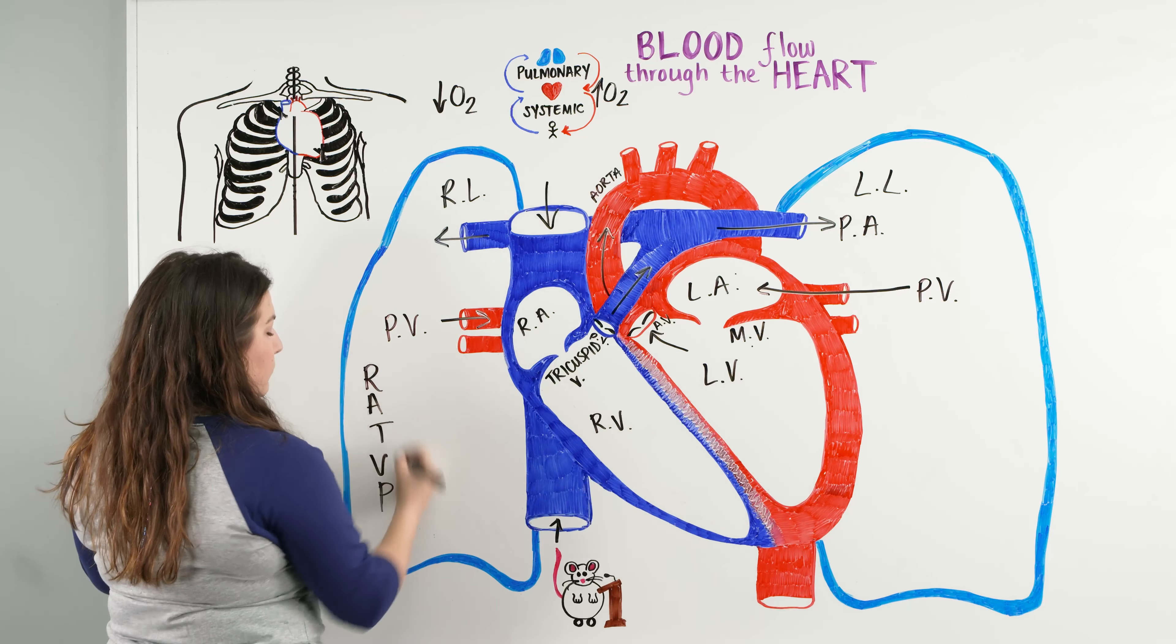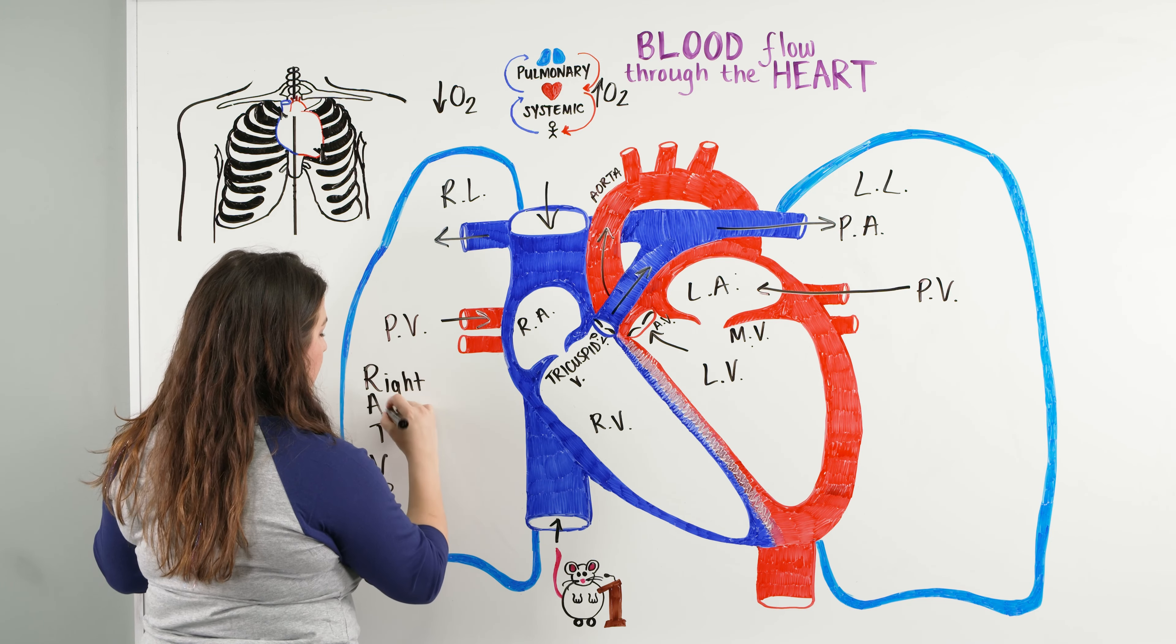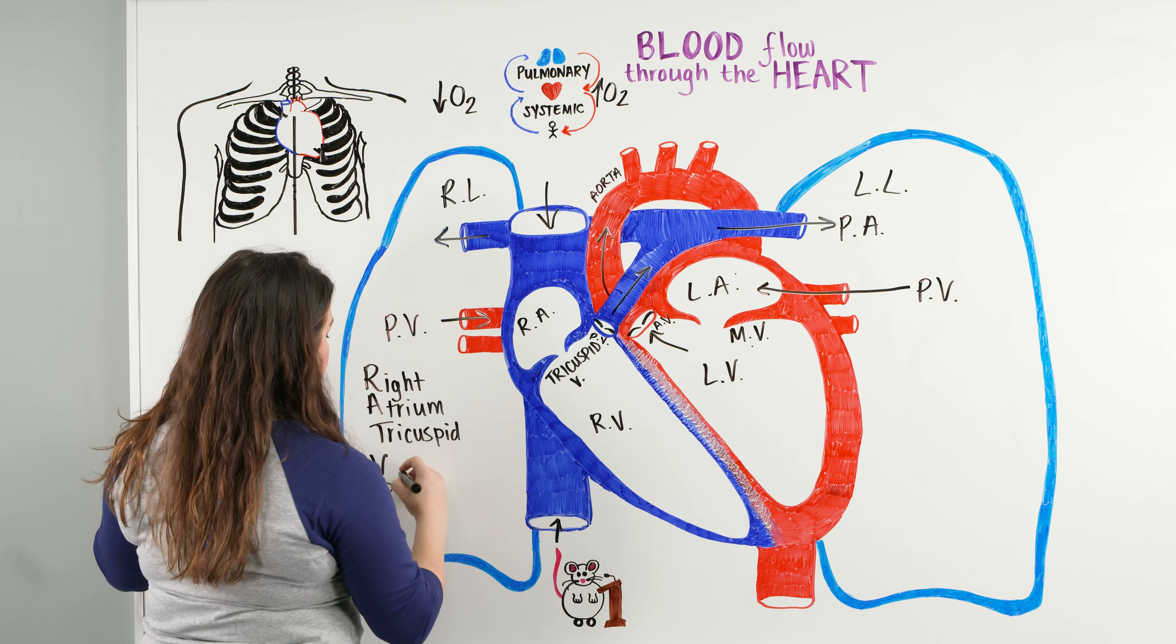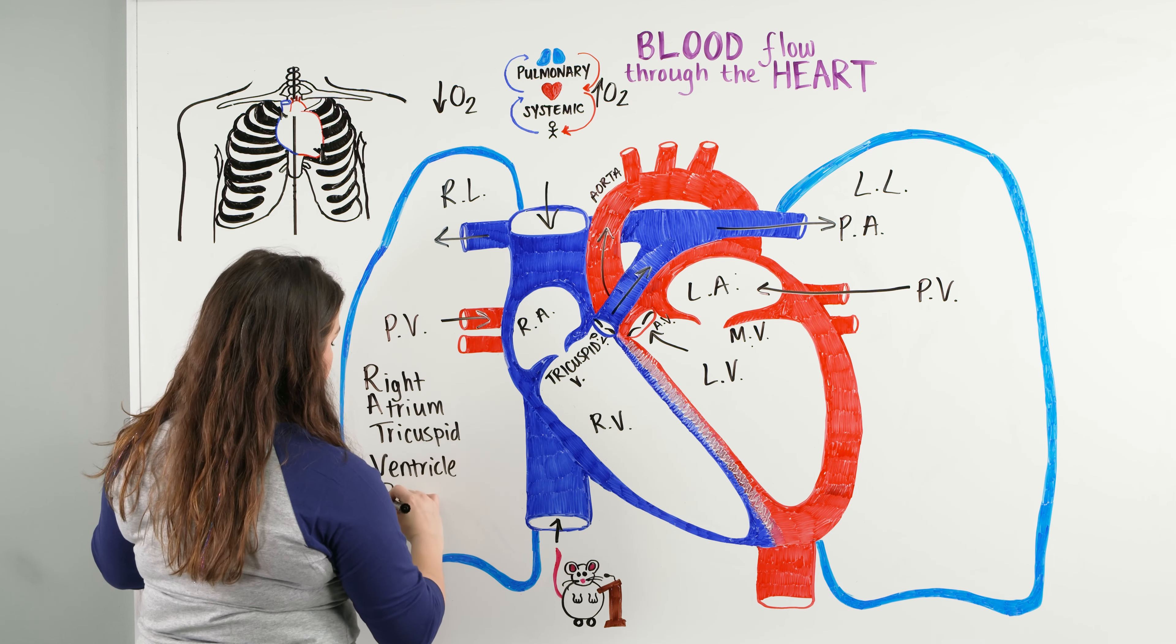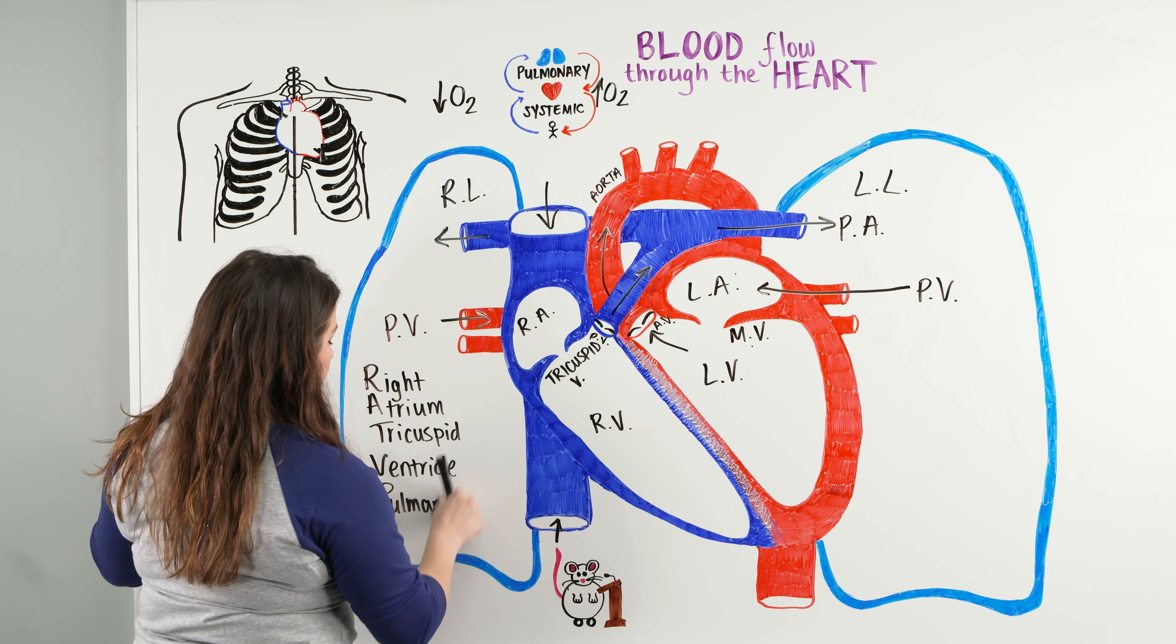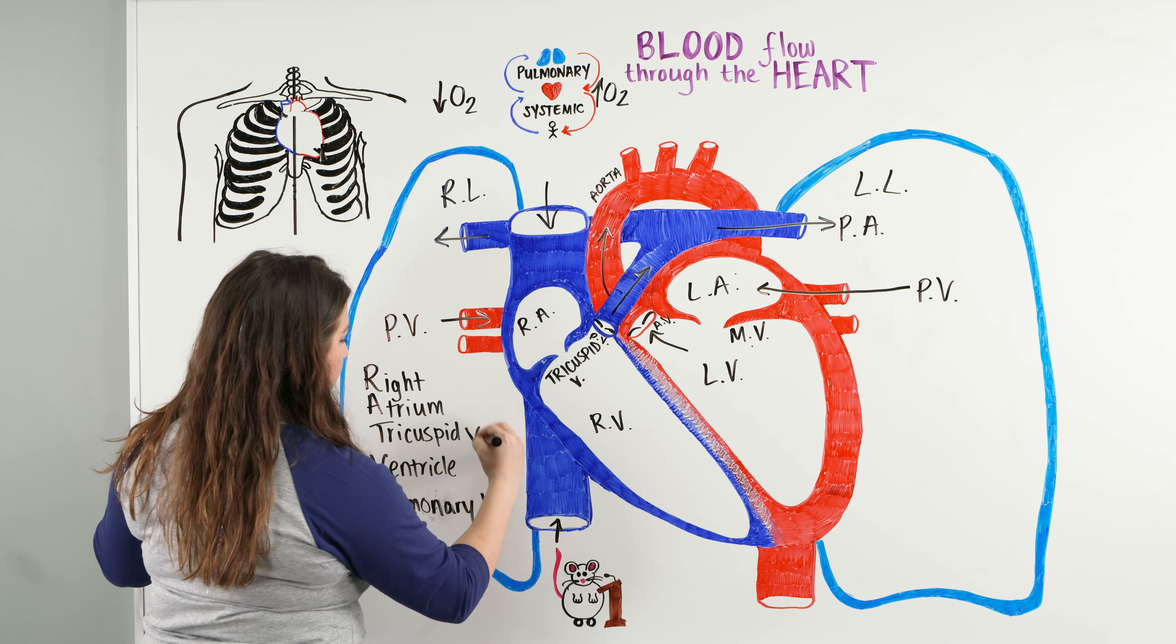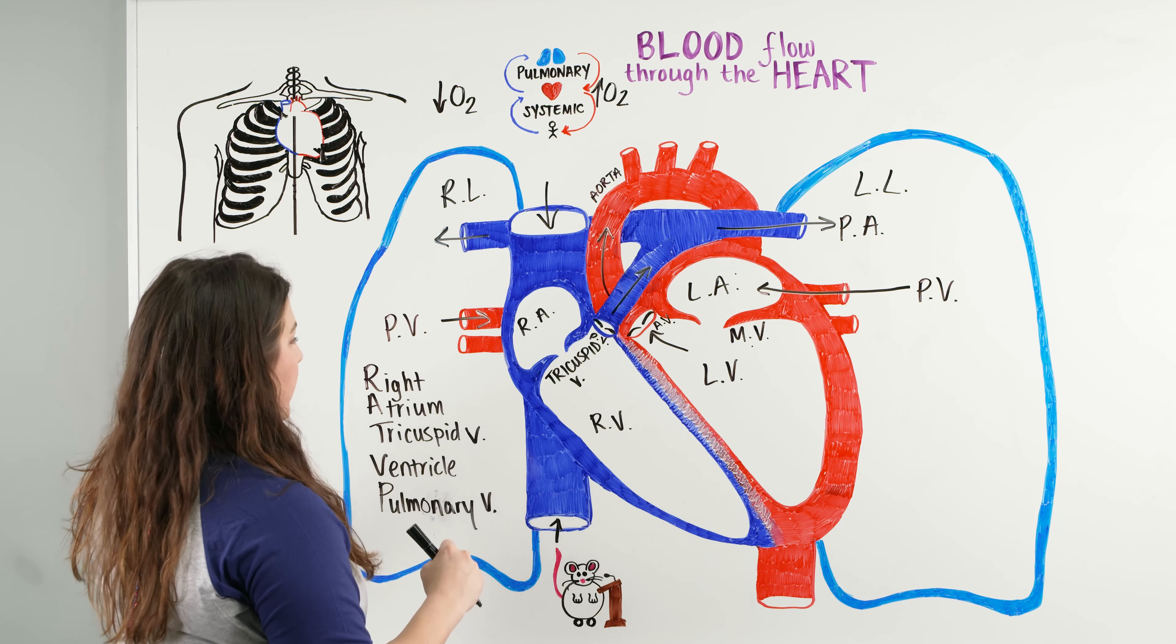The reason it all makes sense to me is if you write down rat VP, you can just remember that it's the right atrium, through the tricuspid, to the ventricle, to the pulmonary valve. So that way, you have the whole right side of the heart, and then by default, you're going to know where we're going from the left side of the heart.